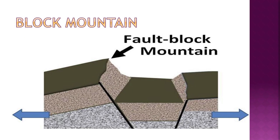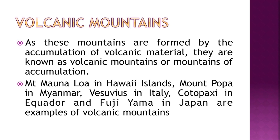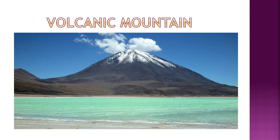Next are volcanic mountains. Due to high temperatures deep inside the earth, rock turns to molten magma. When this molten rock material is ejected to the earth's surface during volcanic eruption, it accumulates around the vent and may take the form of a cone. The height of the cone increases with each eruption, forming a mountain. Mount Mauna Loa in Hawaii, Mount Popa in Myanmar, Vesuvius in Italy, Cotopaxi in Ecuador, and Fujiyama in Japan are examples of volcanic mountains.